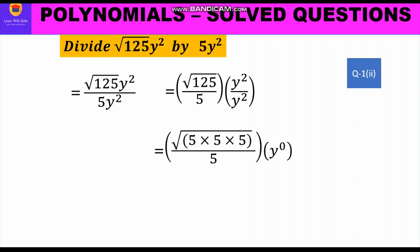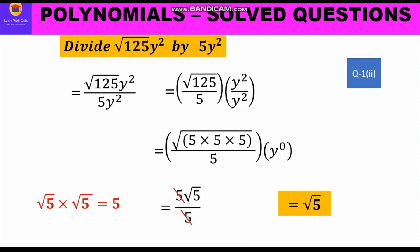For the variable part, applying the laws of exponents: y raised to power 2 minus 2 is y raised to power 0, and anything raised to power 0 is 1. Further, √5 into √5 is equal to 5, so we can write 5 into √5 upon 5. The 5s cancel and we are left with √5 as the answer.